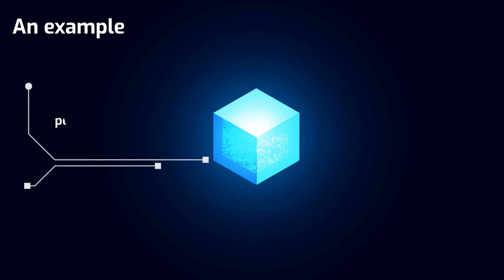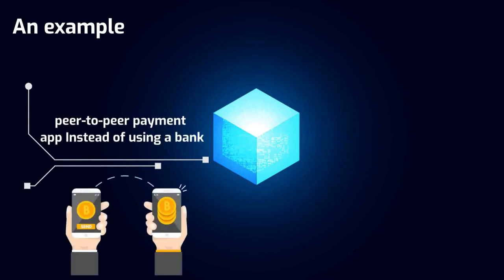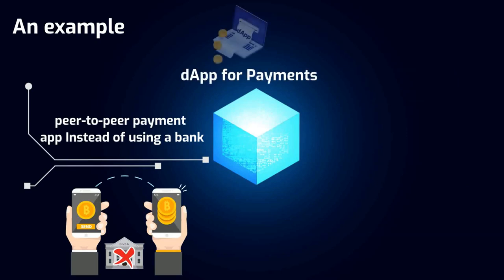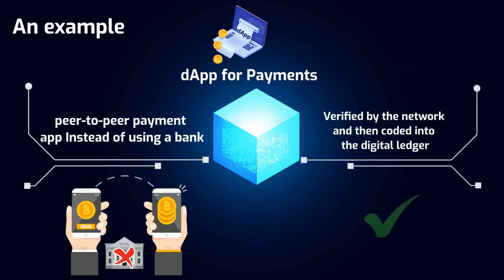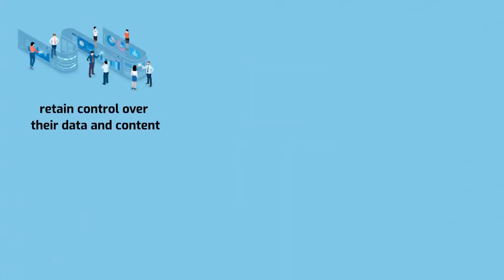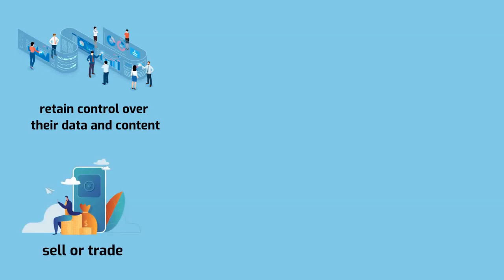An example of a Web 3.0 application might be a peer-to-peer payment app that works on a blockchain. Instead of using a bank, people could pay for goods or services using a decentralized app made for payments. Before the transaction is finalized, it would have to be verified by the network and then coded into the digital ledger of the blockchain. Web 3.0 users retain control over their data and content, and they can sell or trade their data without losing ownership, risking privacy, or relying on intermediaries.